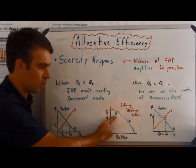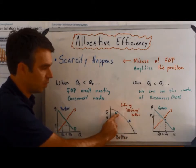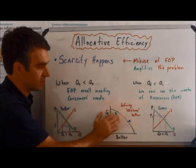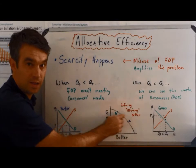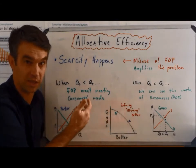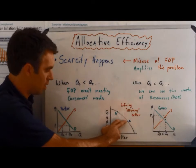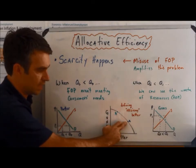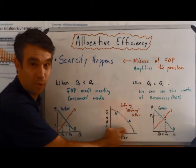But if we look at allocative efficiency, the consumers are saying, no, we want less guns and more butter. So we could talk about allocative efficiency a little bit differently. And again, this is defining efficiency better, looking at efficiency with a little bit more nuance. So moving from B to A would mean producing less guns and more butter.